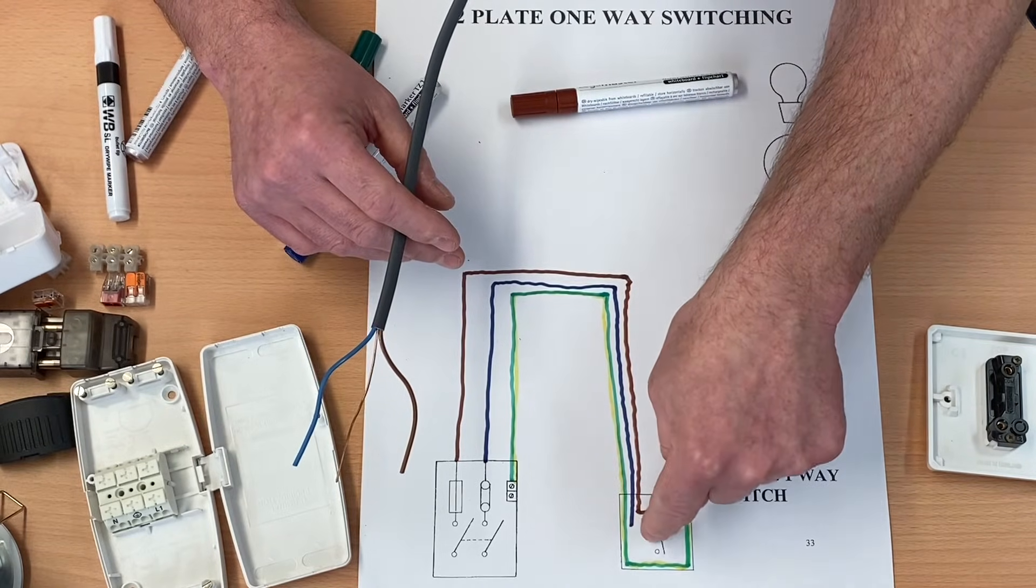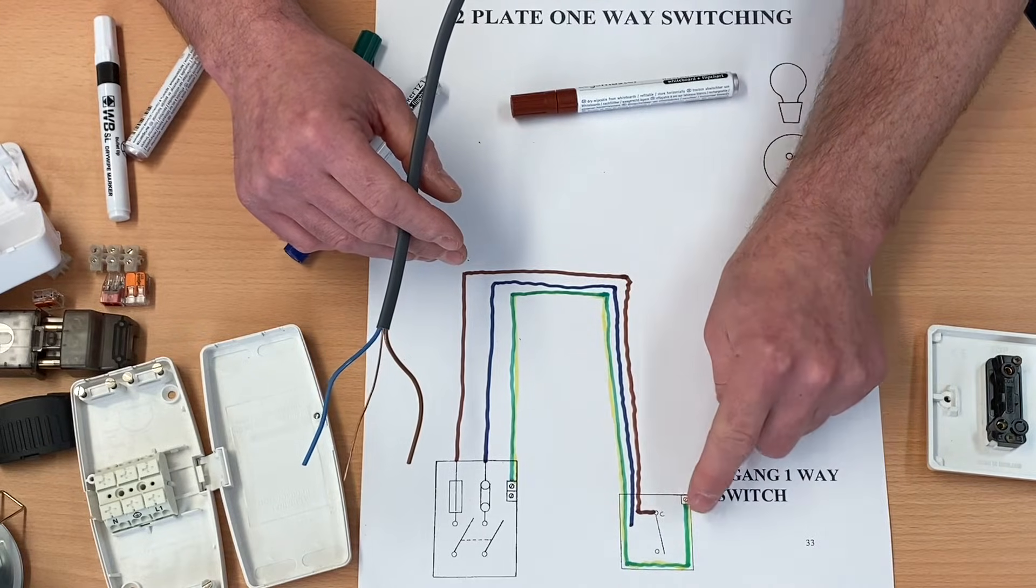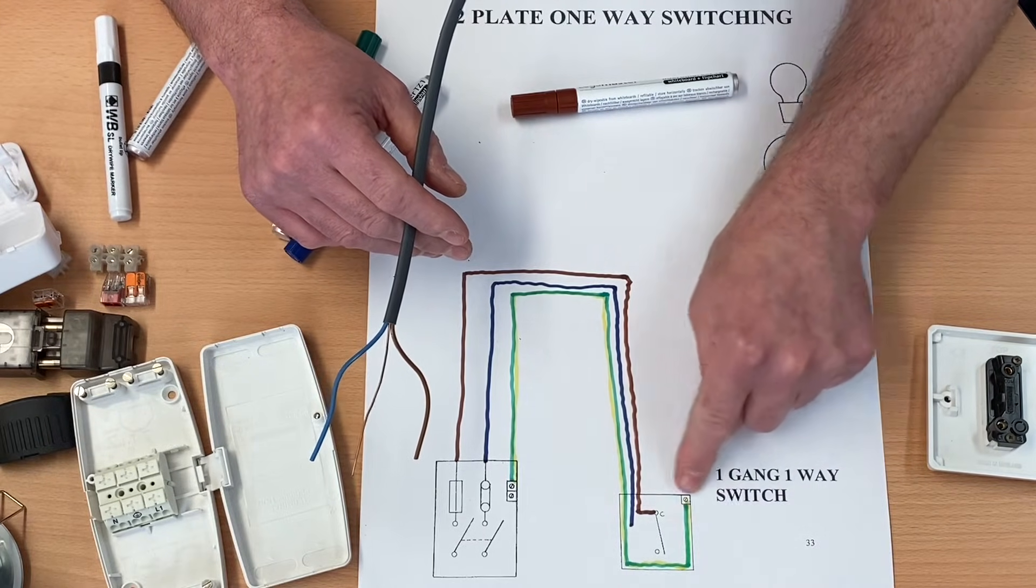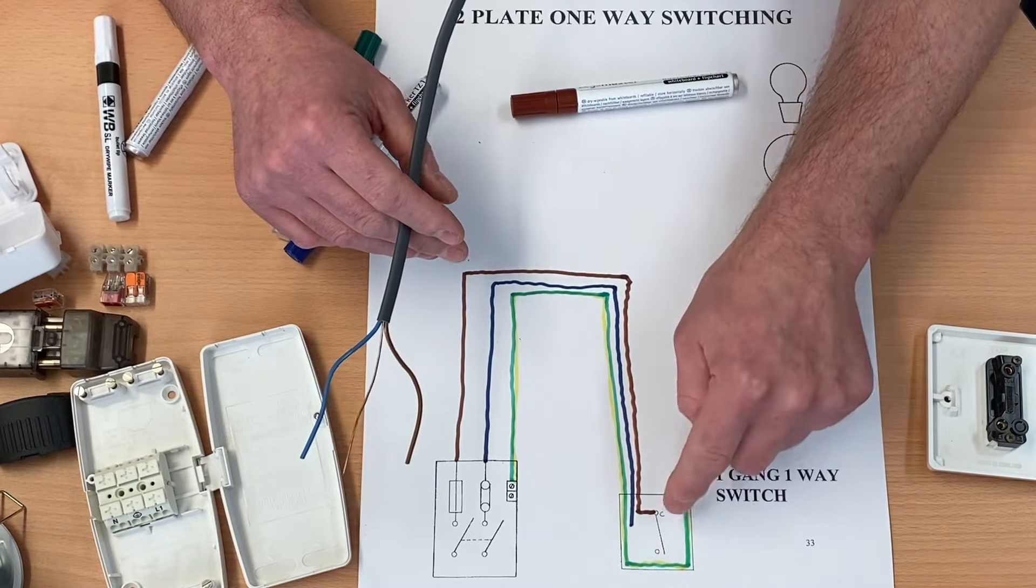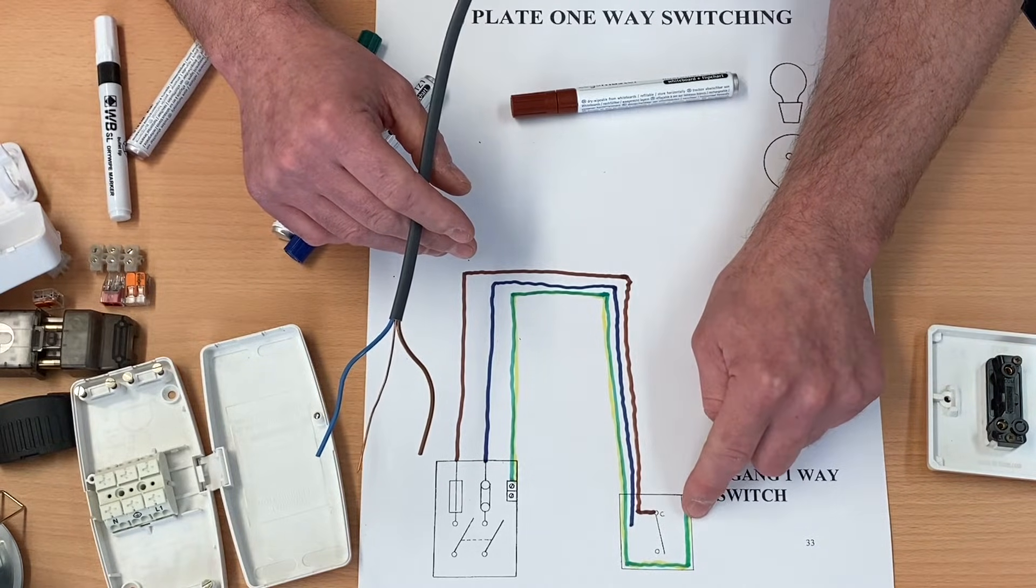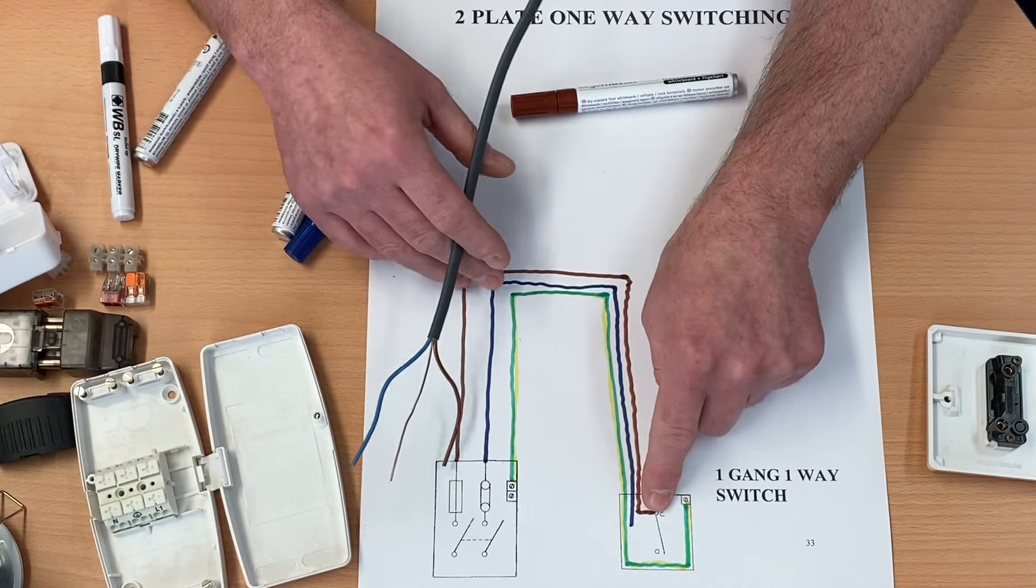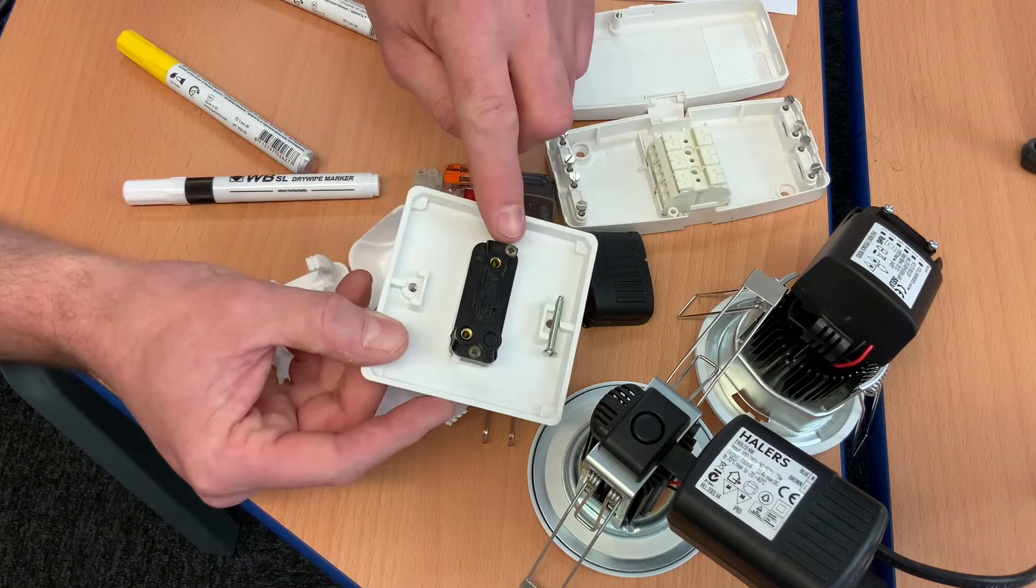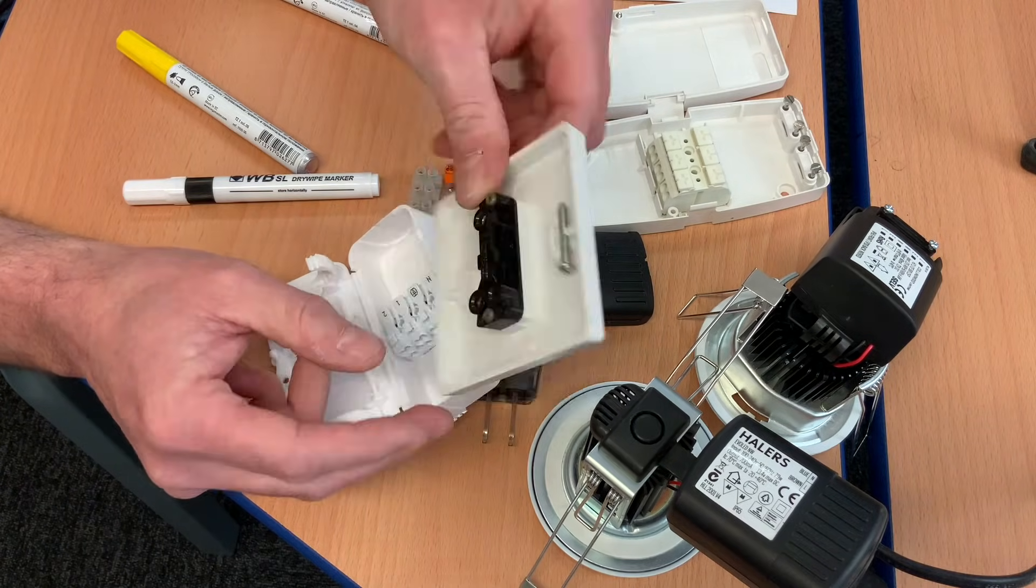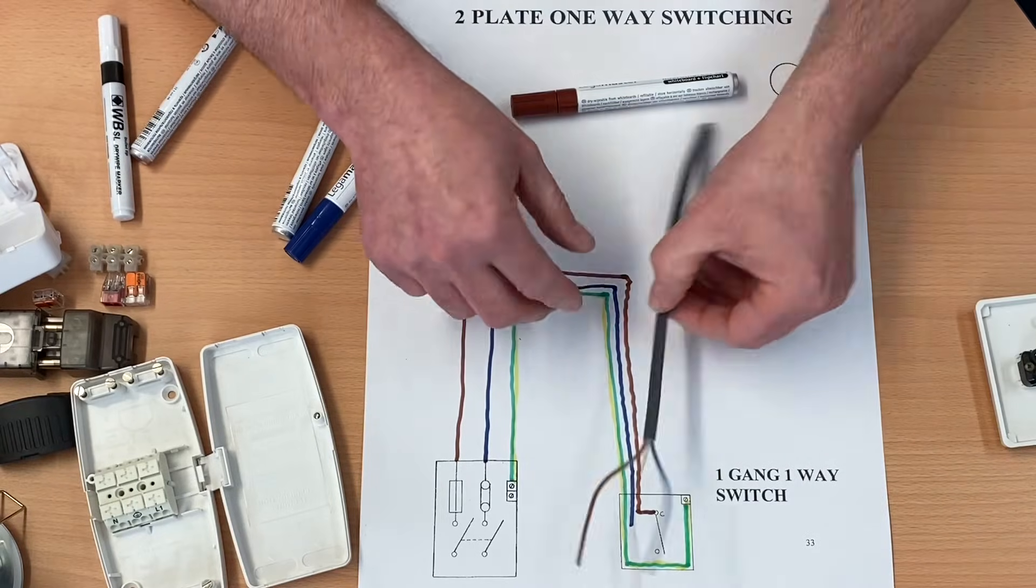And I've brought that cable directly into my switch. I've left the neutral at the moment floating. The CPC is connected into the earth terminal. We use plastic boxes at college. It could be into a metal box or a metal front. You need to make the CPC connection in the appropriate place. And my line conductor, in this case from the top of my fuse, comes directly into the common of my switch. So it comes directly into the common of my one-gang, one-way switch. So that's the first cable brought in.